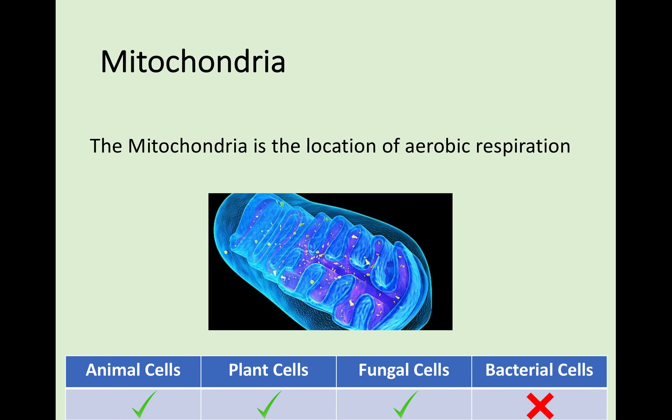Next is the mitochondria. We came across the mitochondria in the animal cells, plant cells, and fungal cells, but not in the bacterial cells. The mitochondria is very important as it is the location of aerobic respiration. We will look at aerobic respiration later on in Unit 1, but for now all you need to know is this is where ATP, or energy, is made in the cell. It is a very important cell structure.